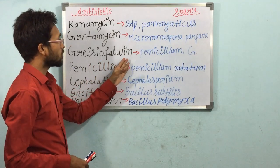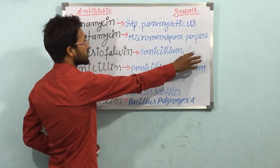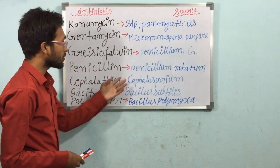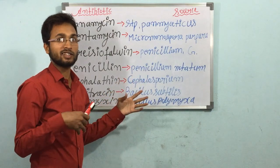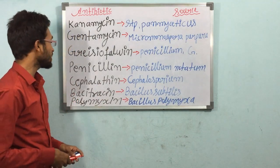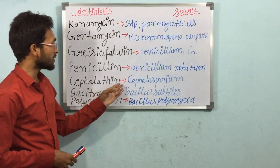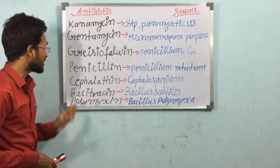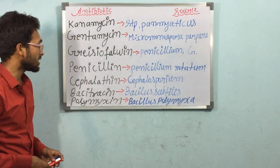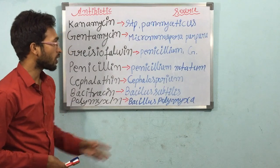Griseofulvin — we can get Griseofulvin from Penicillium griseofulvum. And then Penicillin — everyone knows Penicillin is very famous, and its source is Penicillium notatum. For Cephalosporins, the source is Cephalosporium. Bacitracin is also very famous and it comes from Bacillus subtilis. And lastly, Polymyxins come from Bacillus polymyxa.